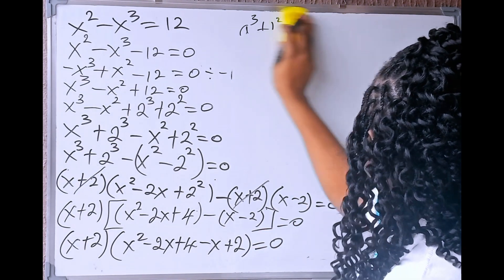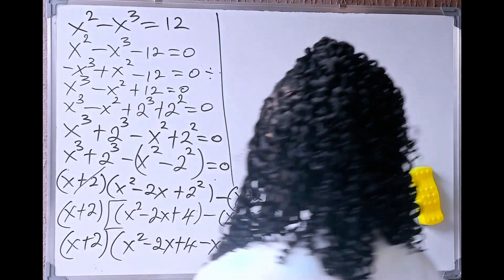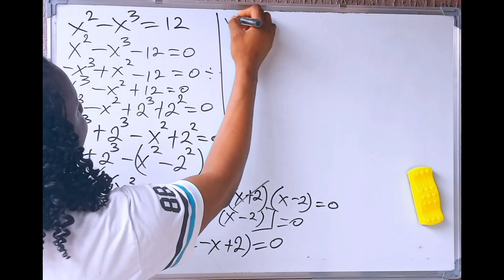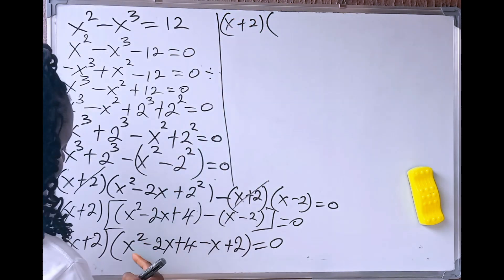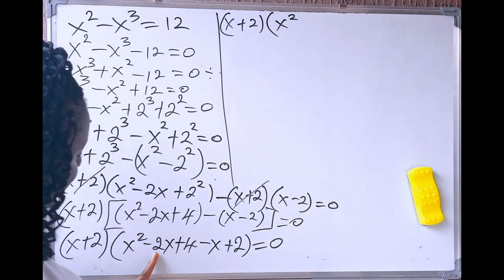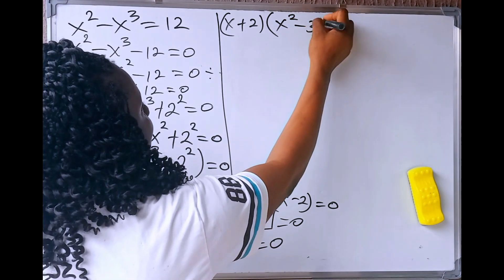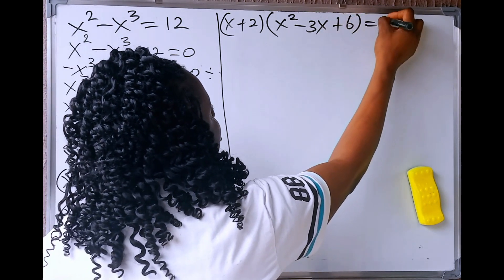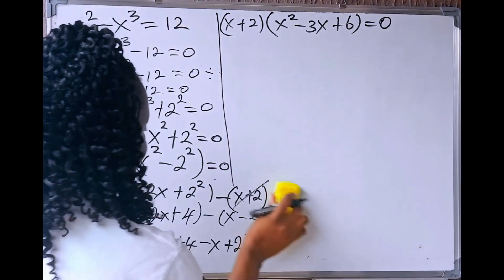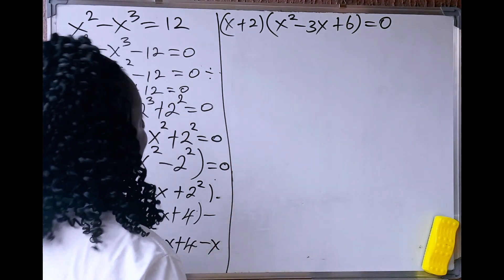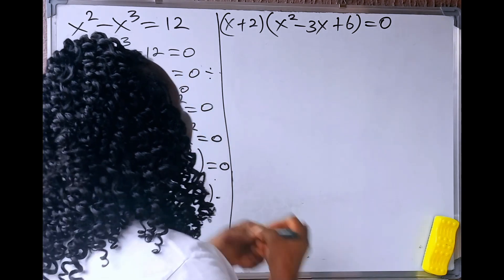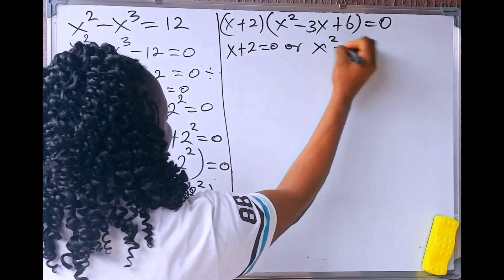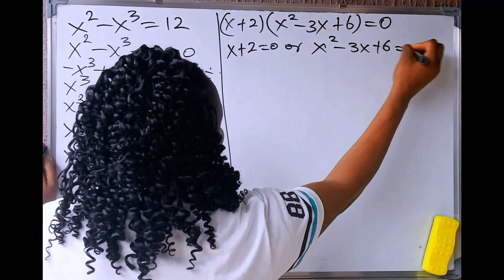We can still simplify further. We are going to have (x plus 2) into (x squared), then minus 2x minus x gives minus 3x, and 4 plus 2 gives 6. So we have (x plus 2)(x squared minus 3x plus 6) equals 0. From here, we apply the zero product rule, so either x plus 2 equals 0, or x squared minus 3x plus 6 equals 0.